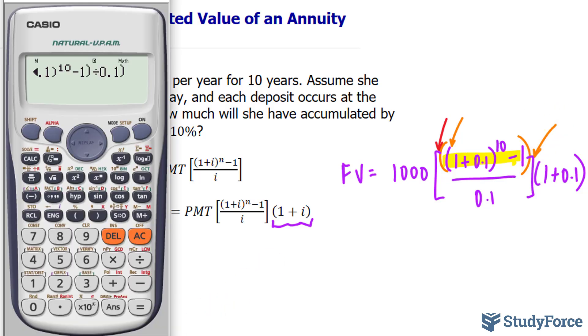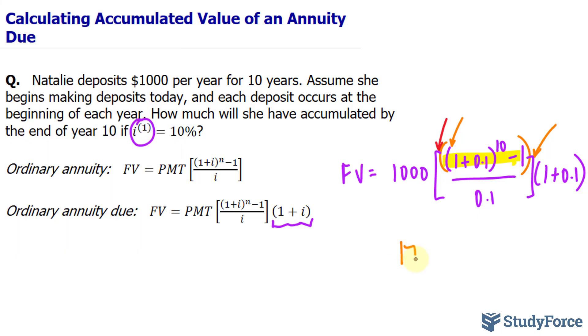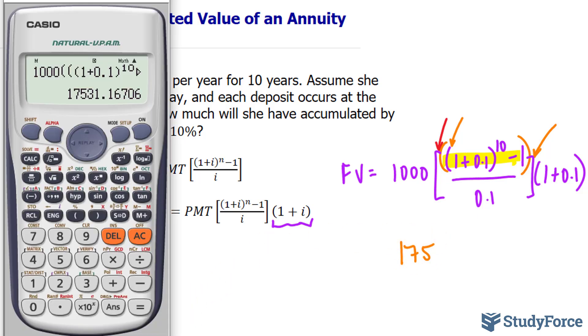Multiply by, and in parentheses, 1 plus 0.1. And this gives us a future value of $17,531.17.